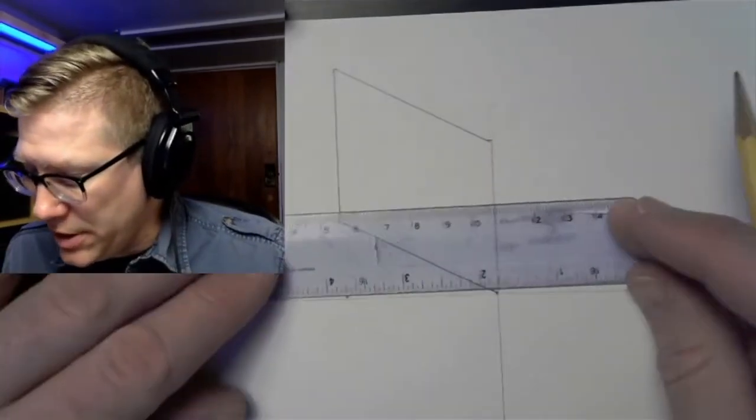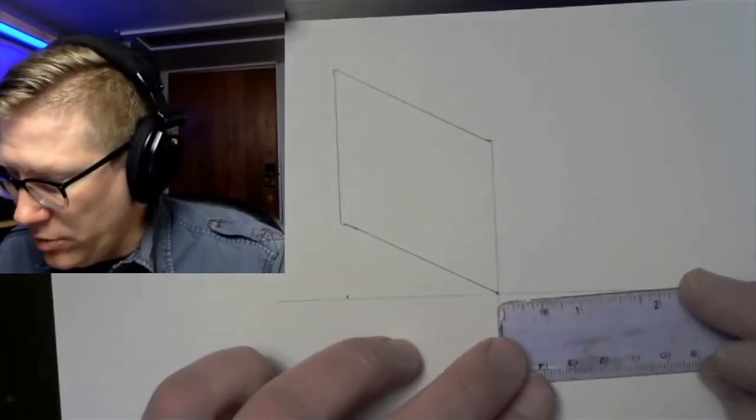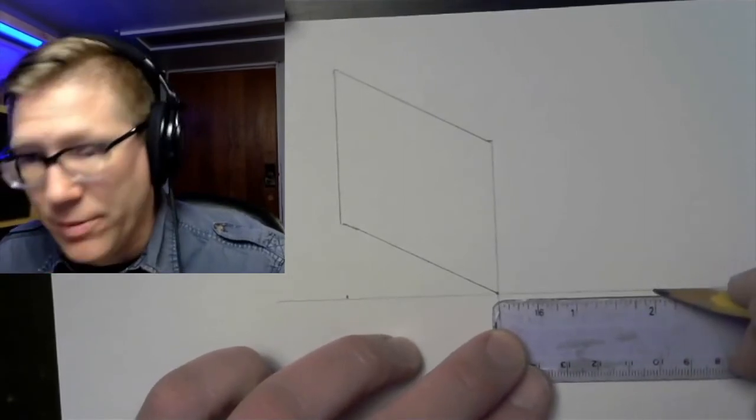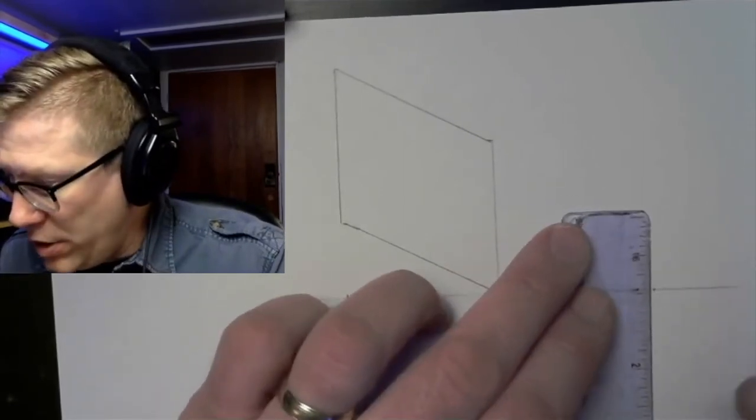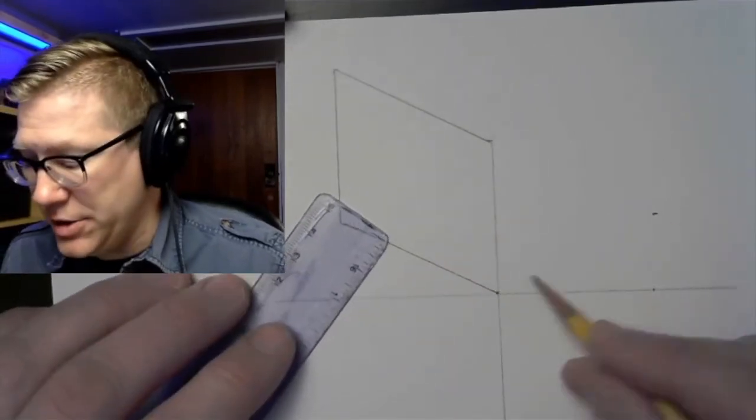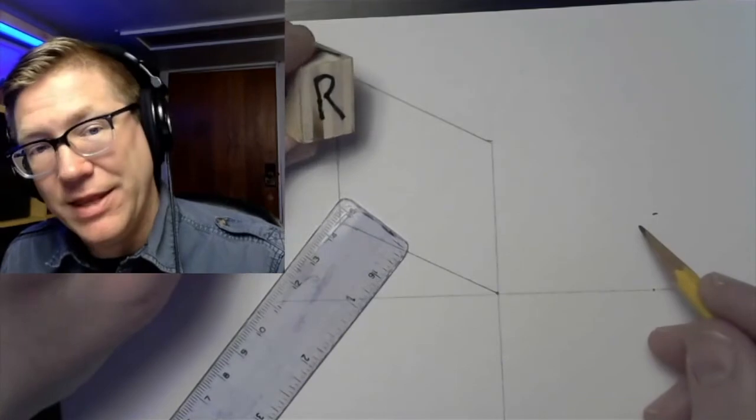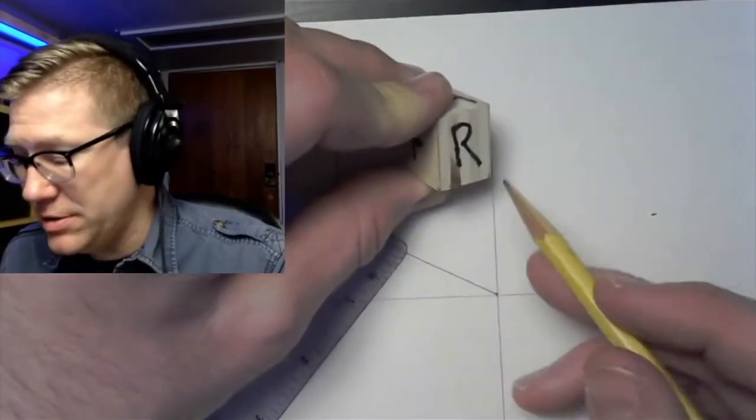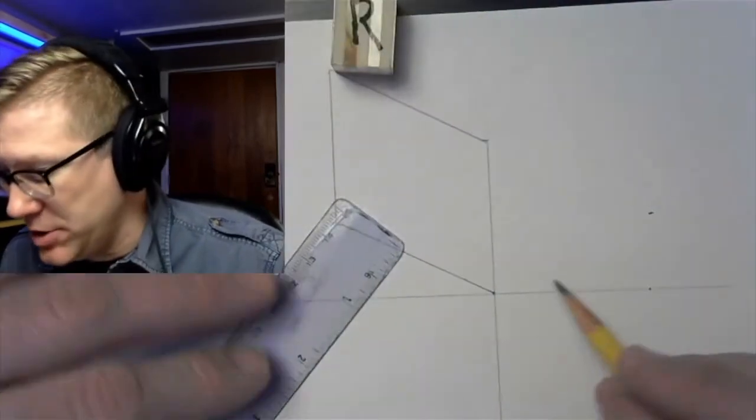To do the other side I'll do the same thing. I'll use my ruler and I'll measure over two inches and make a mark and up one inch and make a mark. And now I can connect this point to this point and that'll allow me to make the right side or right face of this object.